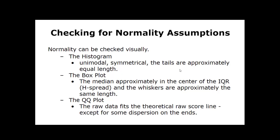Third, the QQ plot plots the raw data against theoretical raw scores created using the mean and standard deviations — essentially what the z-scores and raw scores should be if the data were perfectly normal. If the data is normal enough, you'll get a lot of those dots right on top of that theoretical line, with some dispersion or scatter at the extreme lows and highs where you'll get the most deviation.